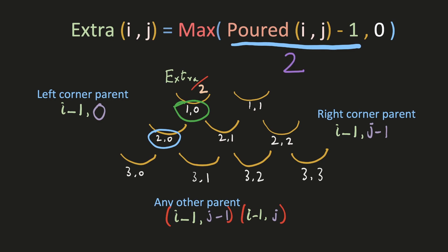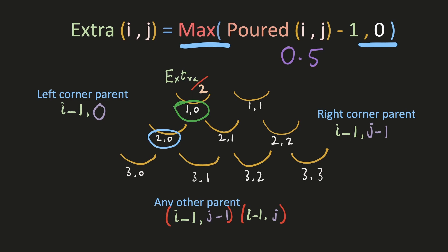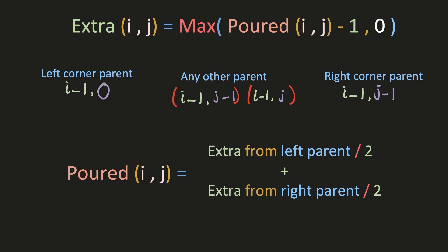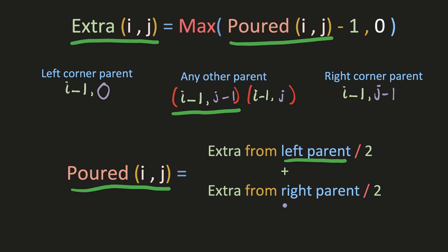For example, if 2 units of liquid is poured into a glass, 1 unit fills it and the remaining 1 unit is extra. We need the half of the extra from the left parent and the half of the extra from the right parent. We already have the index of both parents and can use these formulas recursively. Similarly, we calculate the half of the extra from the right parent using its known position, applying the formulas recursively to find the answer.